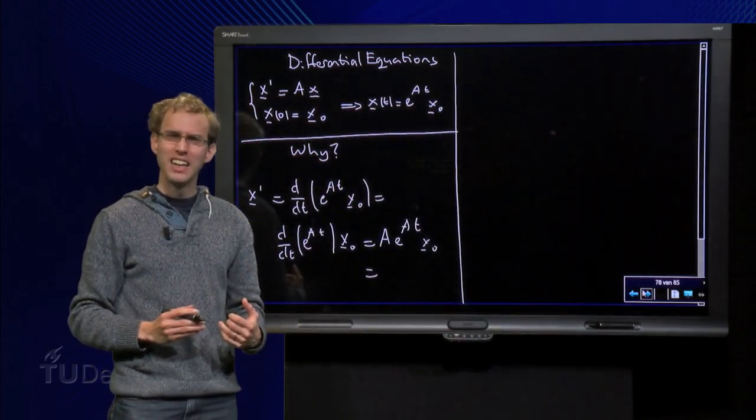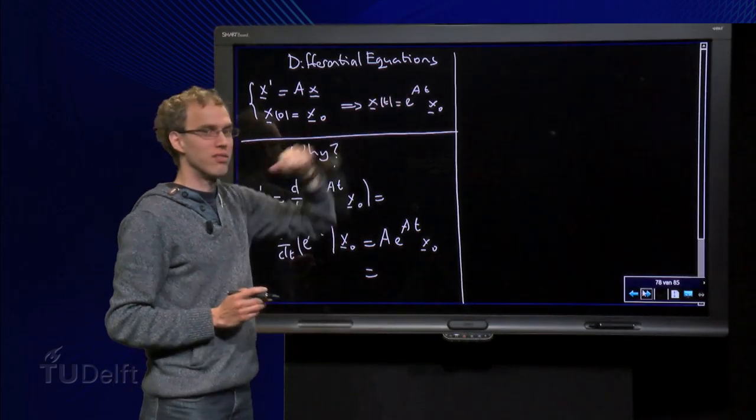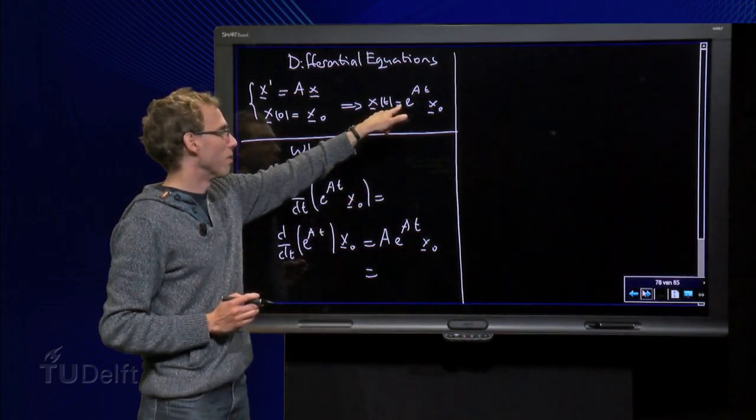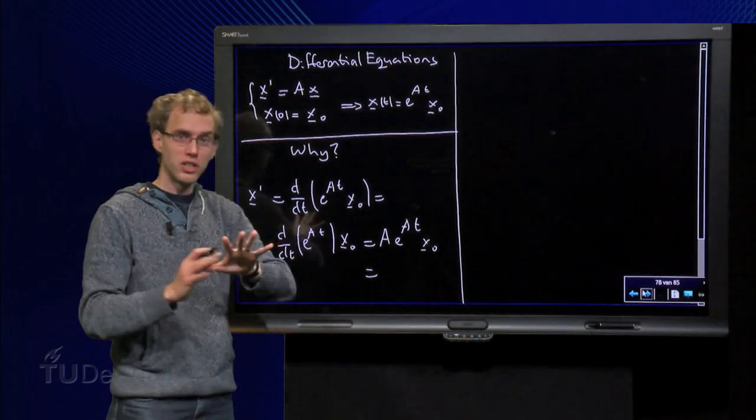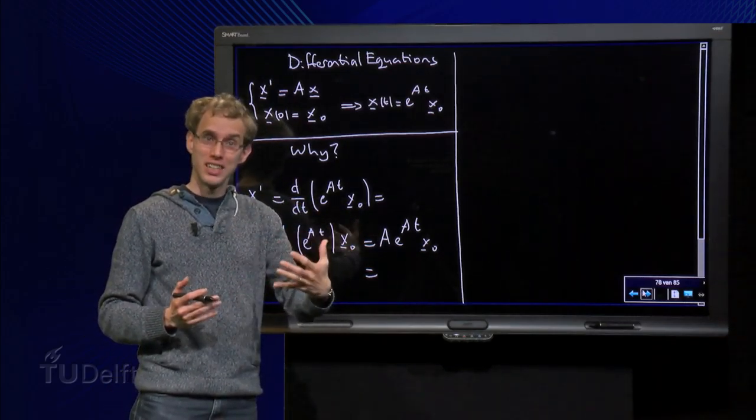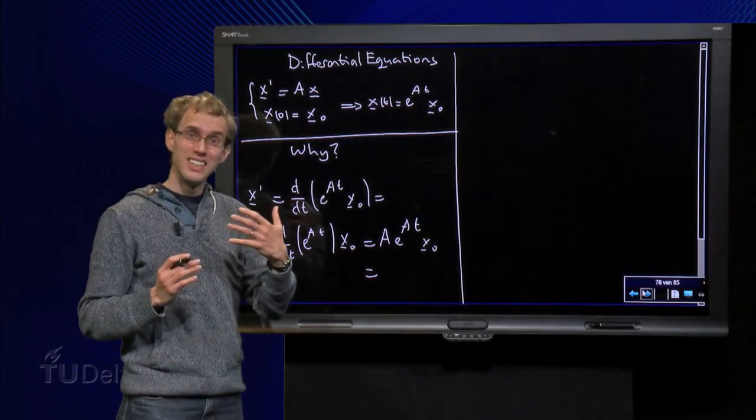Why? Well, first check the initial condition. Plugging in t equals 0, we find e to the power 0 over there equals 1 x0, so that's ok. The solution satisfies the initial condition. This will also satisfy the differential equation.